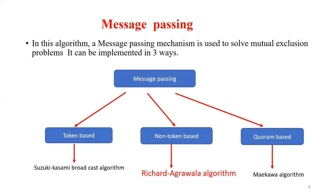Message passing is the mechanism used here to implement mutual exclusion. Message passing can be implemented in three ways: token-based, non-token-based, and quorum-based. The Suzuki-Kasami algorithm is an example of token-based, and Ricart-Agrawala is an example of a non-token-based algorithm.